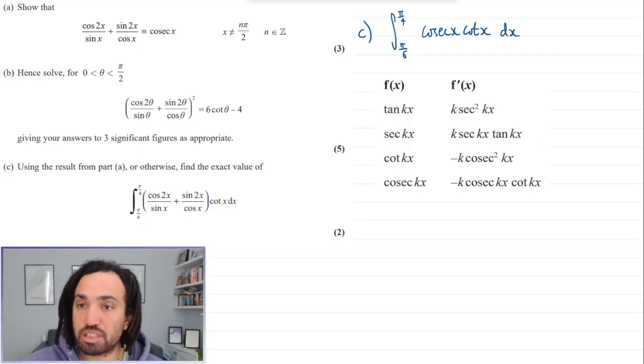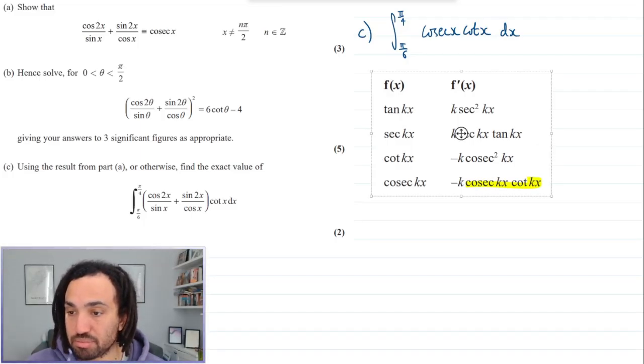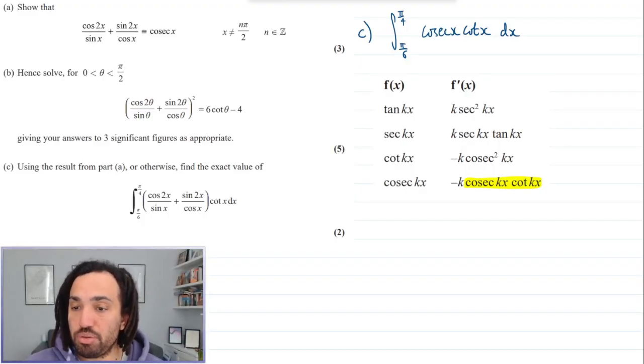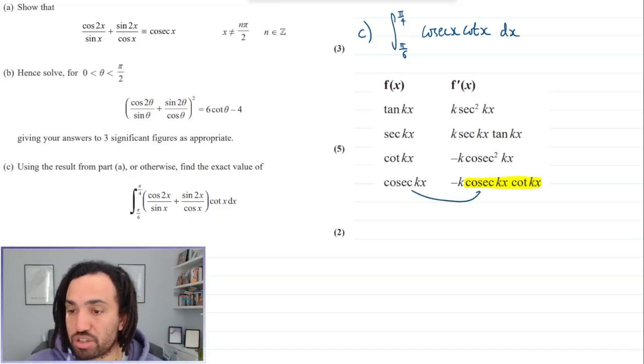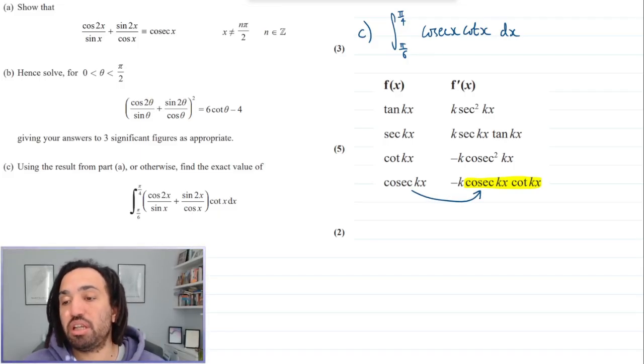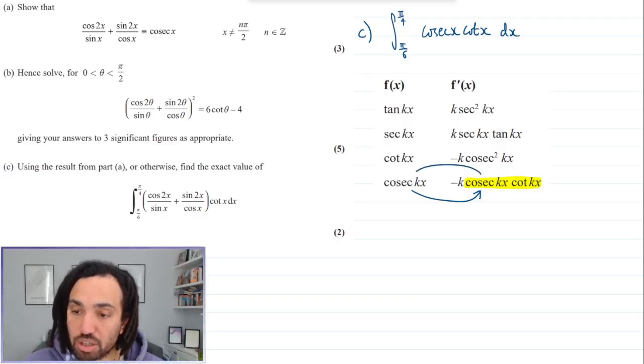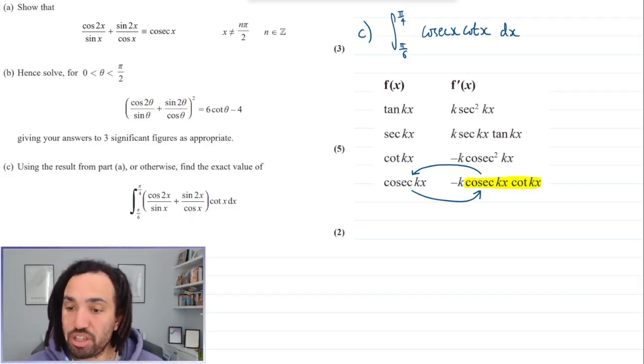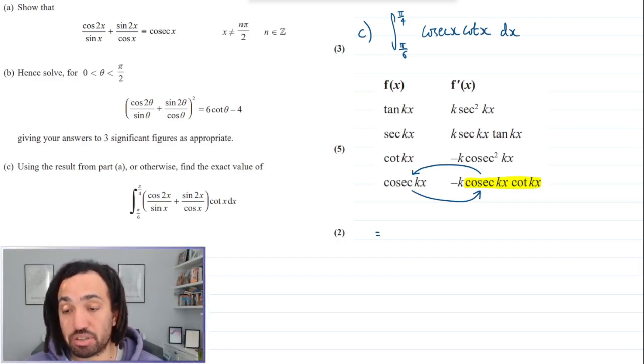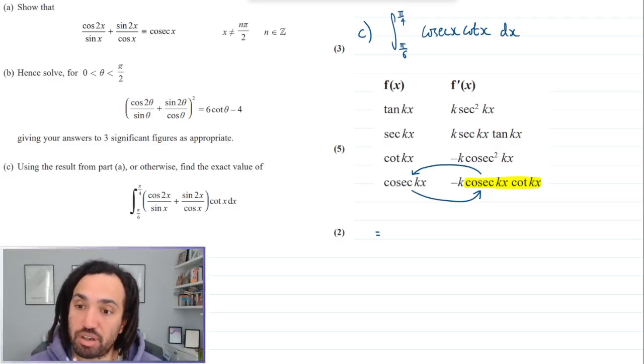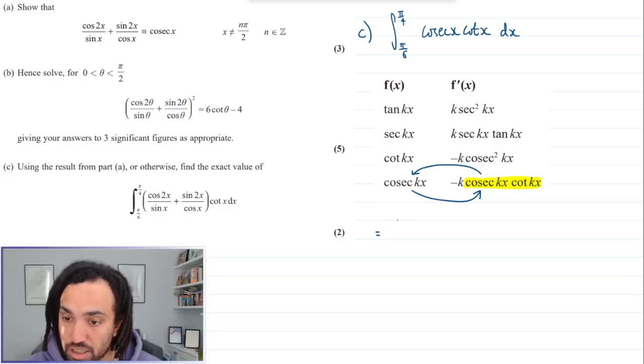I get this in the differentiation section. Now okay, this is looking a little bit more promising because we've got this over here. That tells me that cosec differentiates to minus cosec cot, so therefore minus cosec cot integrates to cosec. So I can use that to my advantage.